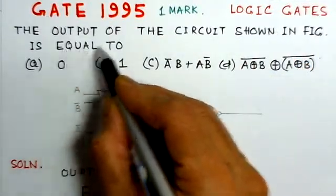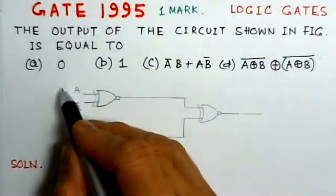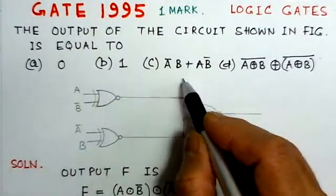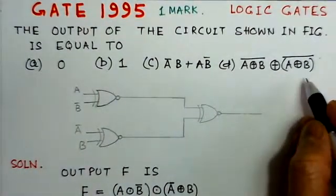The problem is the output of the circuit shown in figure is equal to, there are four options here for the output of this circuit.